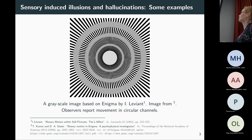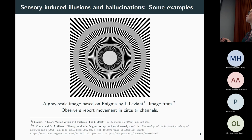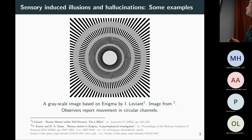Here's another example where you get some movement within a figure that is static. This is the Enigma hallucination, based on some pop art by Leviant, which was originally in colour but here it's in greyscale. You can maybe see some sort of wavy movement within the grey rings. This one is a bit more subtle than the last one, but again there's some perceived movement within a static figure.